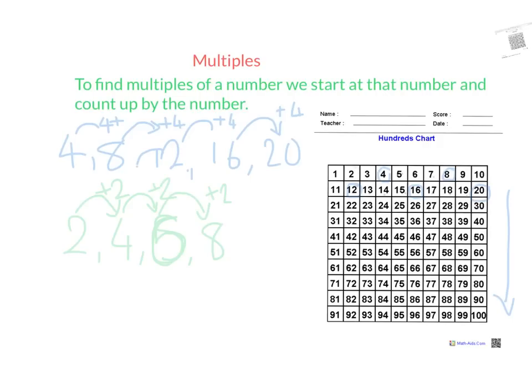And I can do that on the 100s chart again. So there is my 2, and there's my 4 getting circled again, and then my 6, and my 8. And I can keep going on and on. Again, all I'm doing is counting up by 2. So what we have here — I'm just going to circle that again so you can see it in the blue and the green — and that's the next slide that we're going to go to.